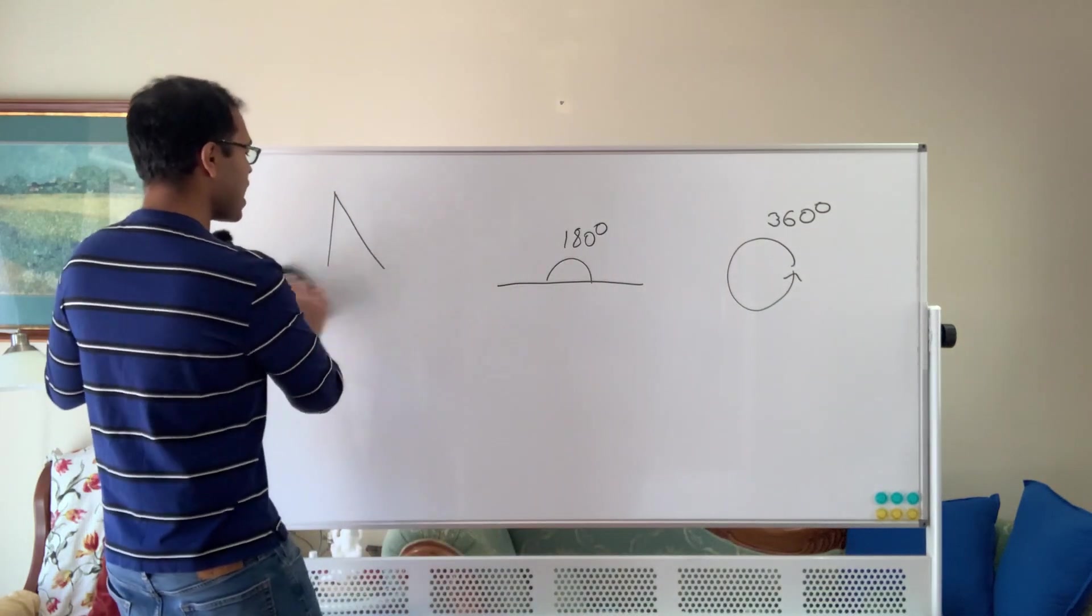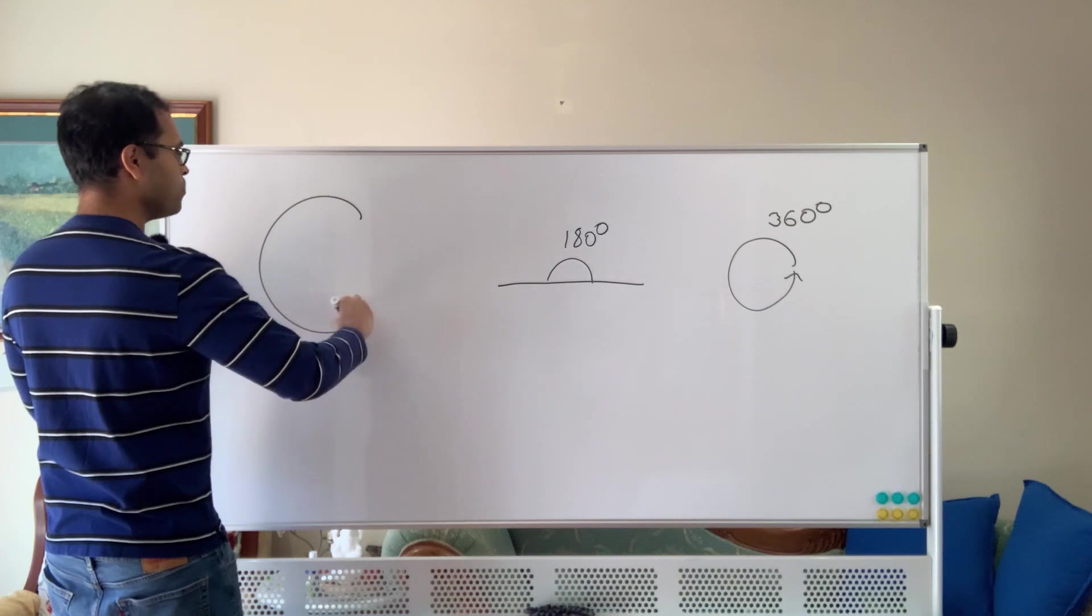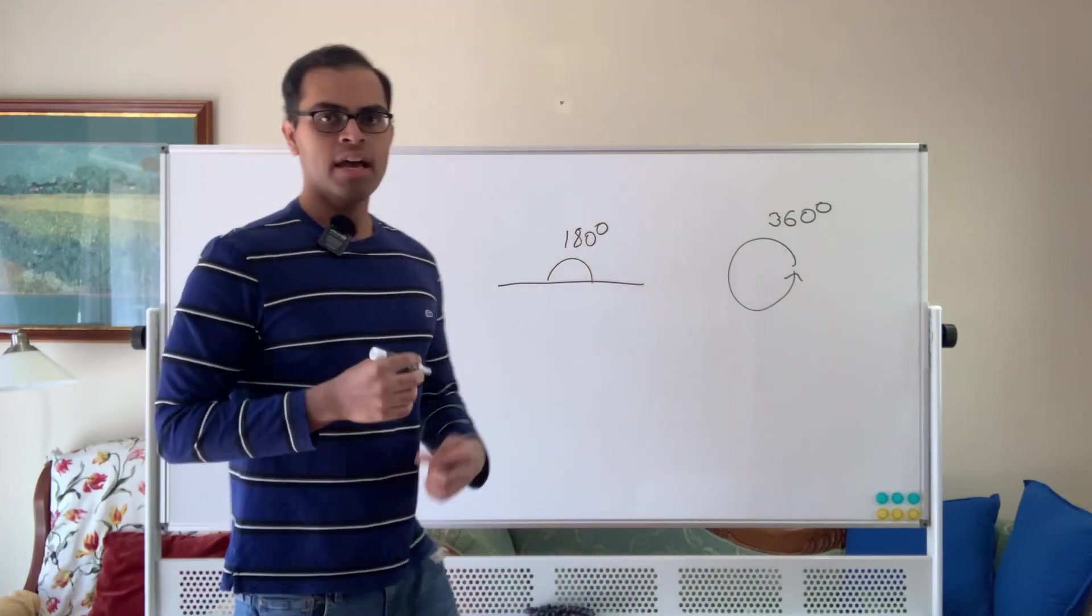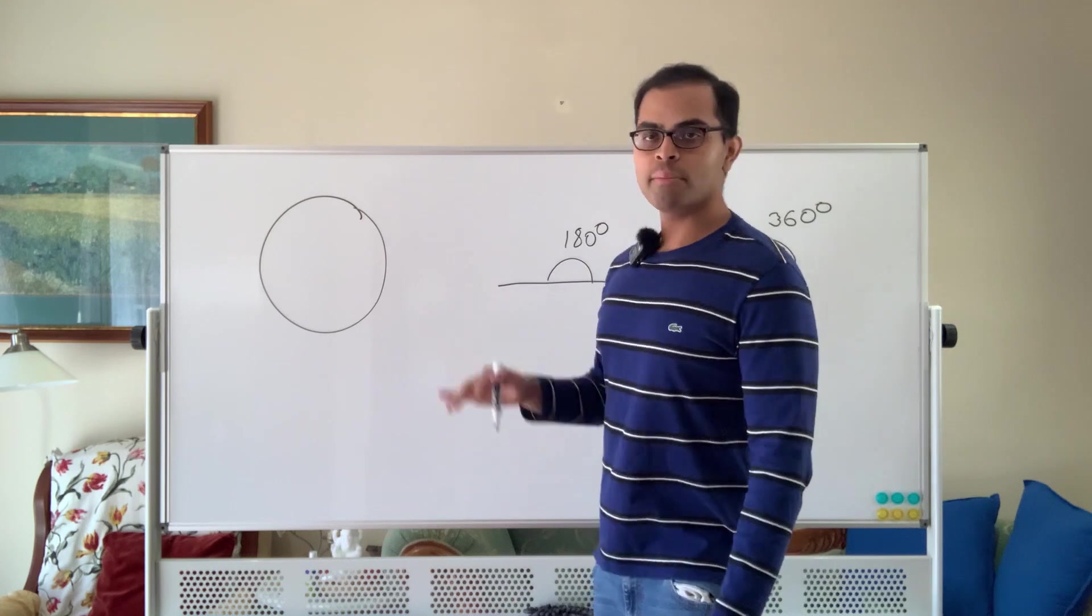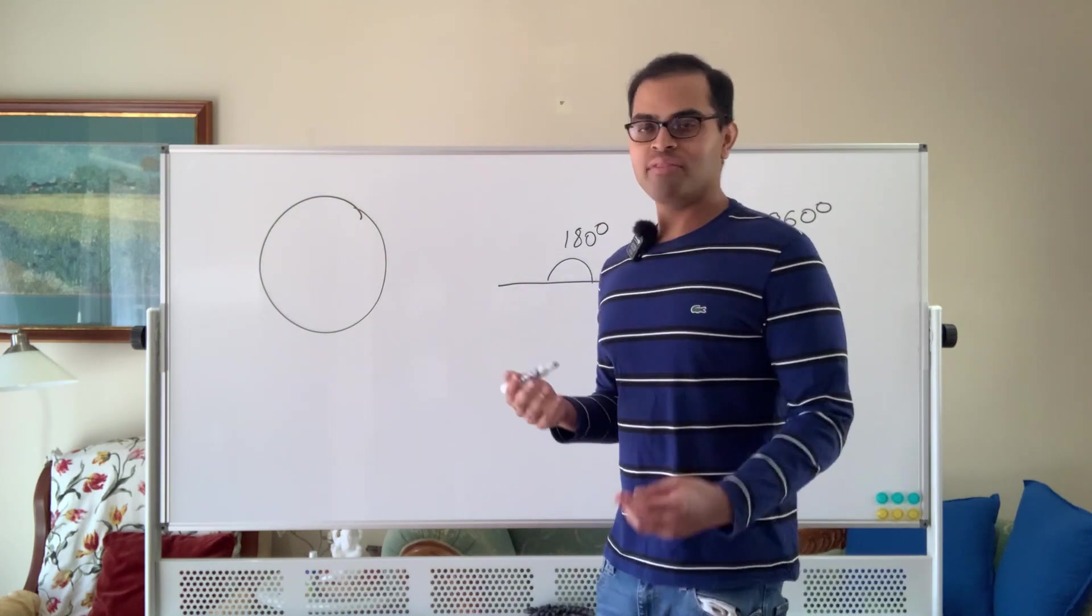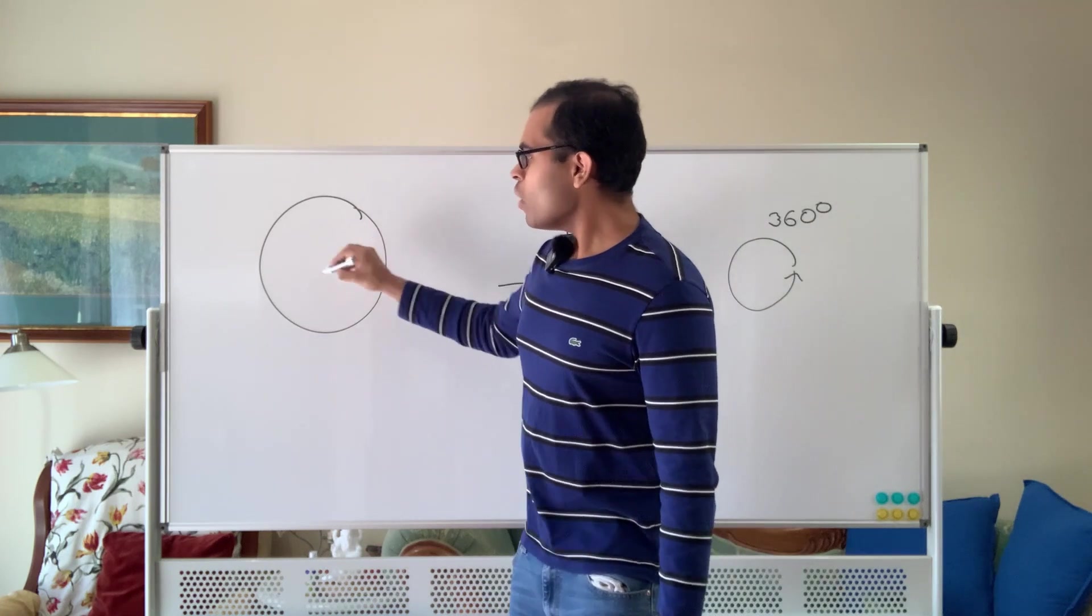It starts off with the idea of taking a circle and dividing it into pieces. So you have a circle, you want to divide it into pieces. Even in day-to-day life, if we eat a pizza, we want to divide it into a certain number of pieces. Now, if you have a circle or a pie or whatever, for example.